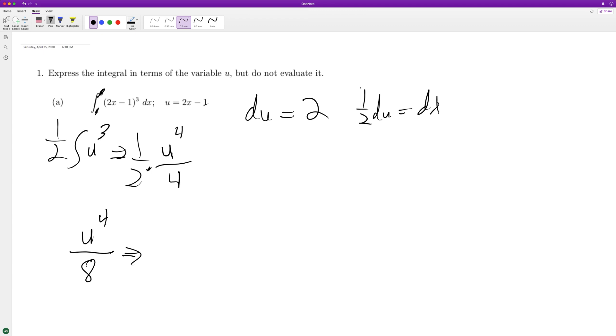Substitute back in. And let's see here. So it should end up being 2x minus 1 raised to the 4th over 8.